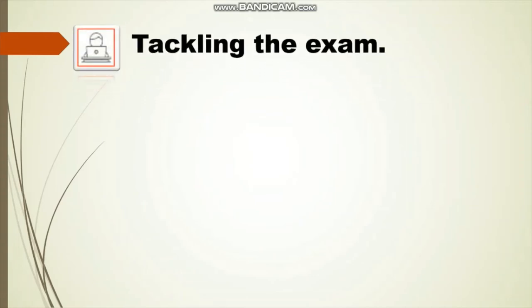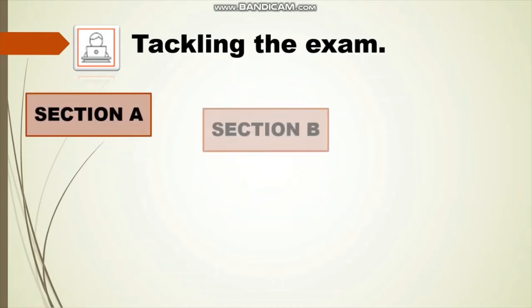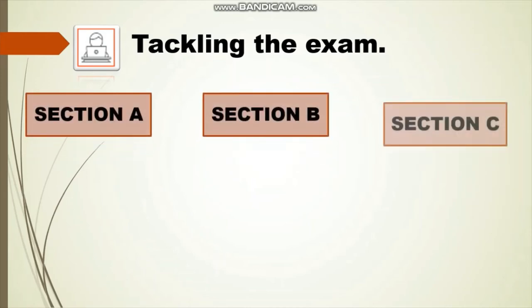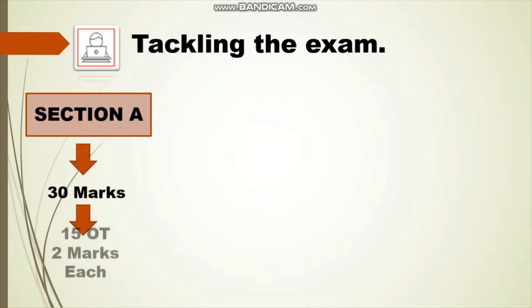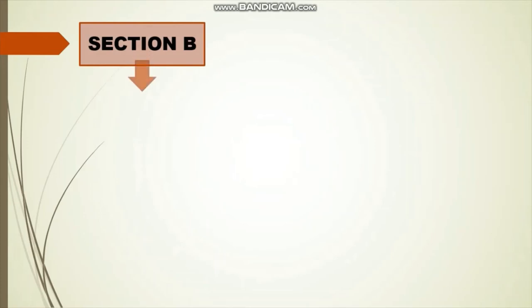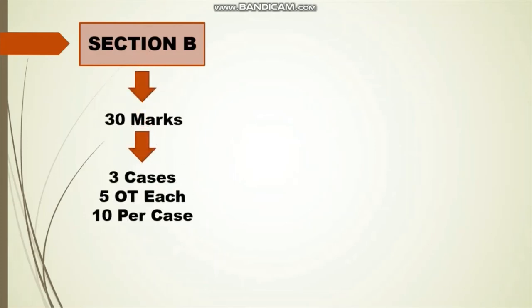The exam paper is mainly divided into three parts: Section A, Section B, and Section C. Section A is a 30-mark section having 15 Objective Test (OT) questions, each worth two marks. Section B is also a 30-mark section having three OT cases, each containing a scenario with five OT questions worth two marks each — a 10-mark case.